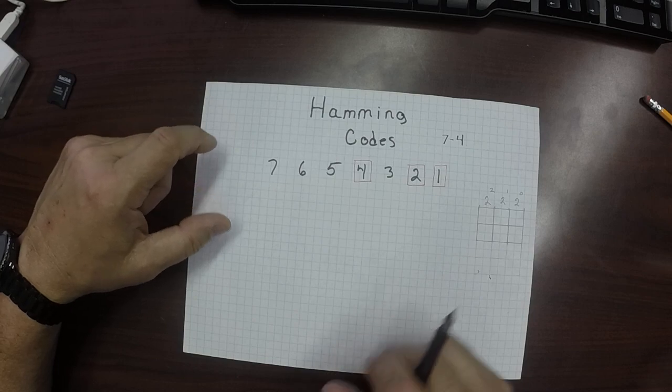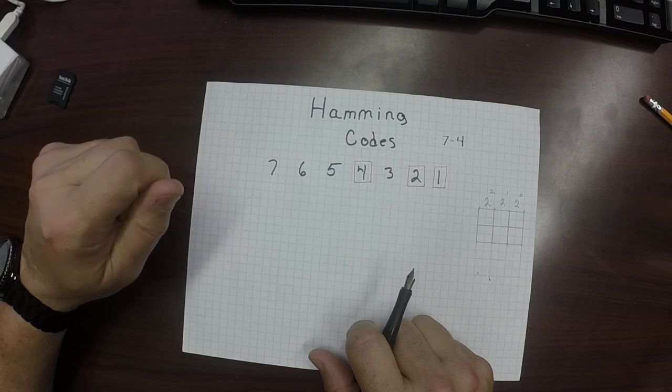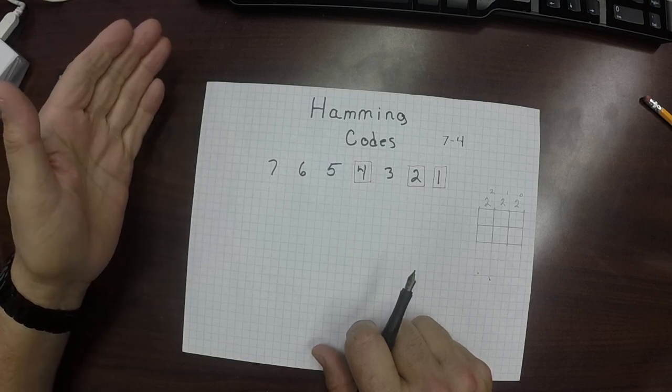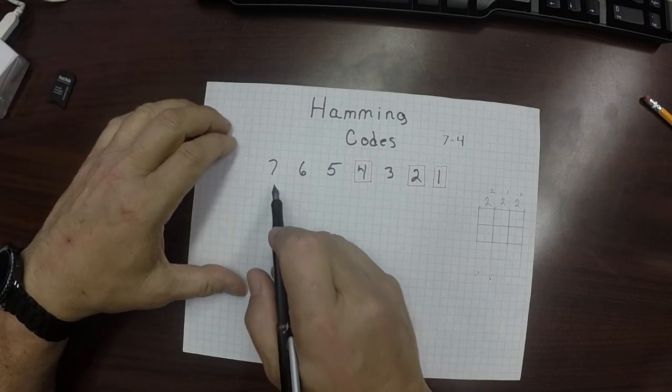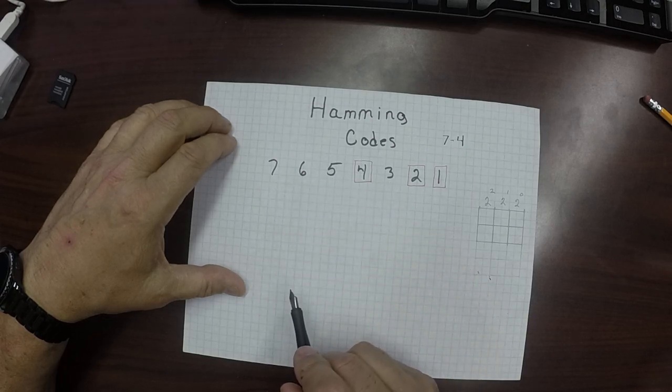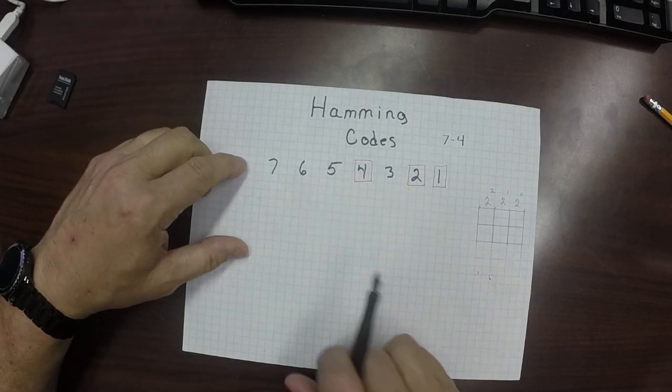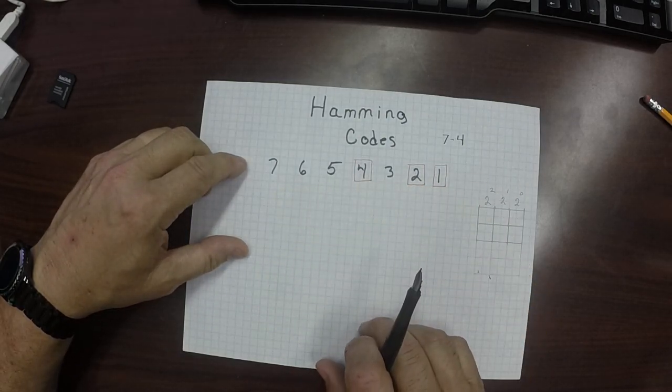Now you'll notice that I have the numbers 1, 2, and 4 circled in red. These are what we call the check bits or the parity bits. The data bits will actually go into 7, 6, 5, and 3. So the code we want to send will be in these bits right here. The check bits will be in those and we'll calculate those later.